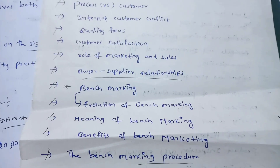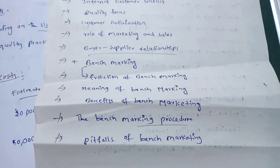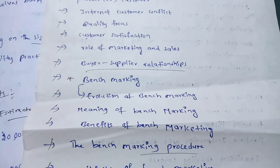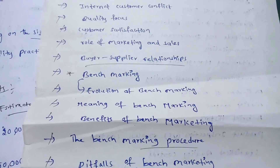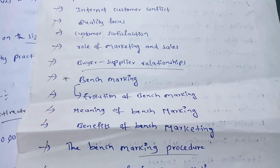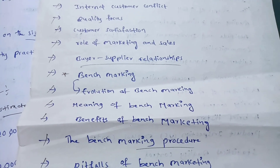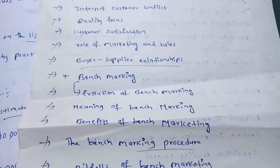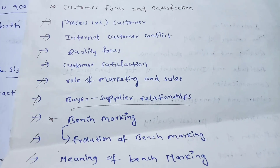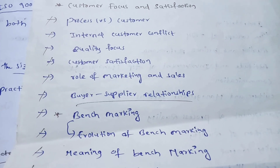These are the topics in unit two. Star-marked topics are important, but every topic is important. Benchmarking topics like evaluation and benefits are important. Process versus customer is also important. These are the important topics in unit two.